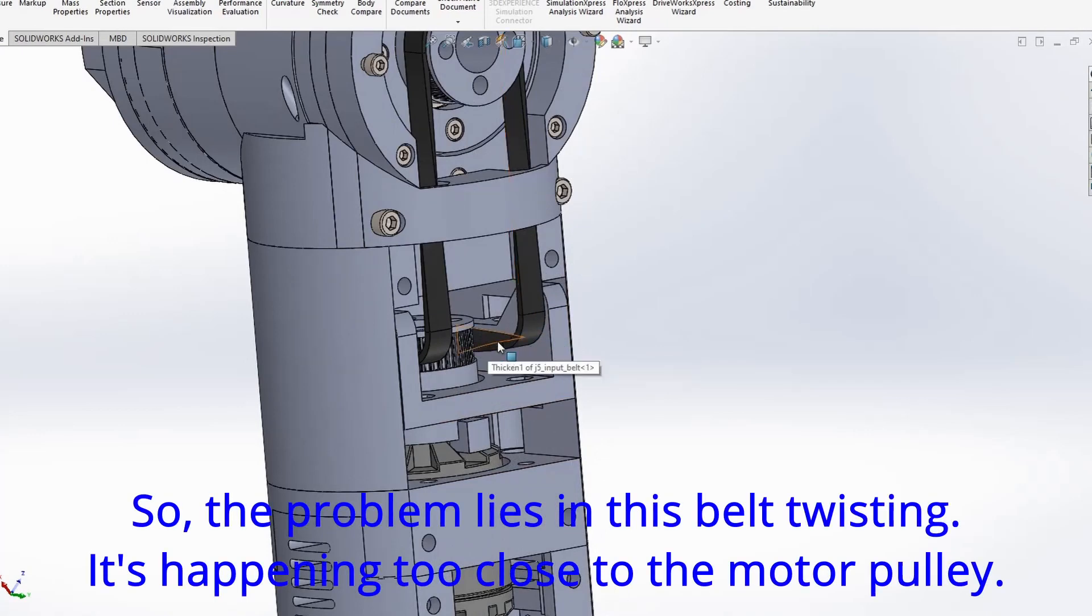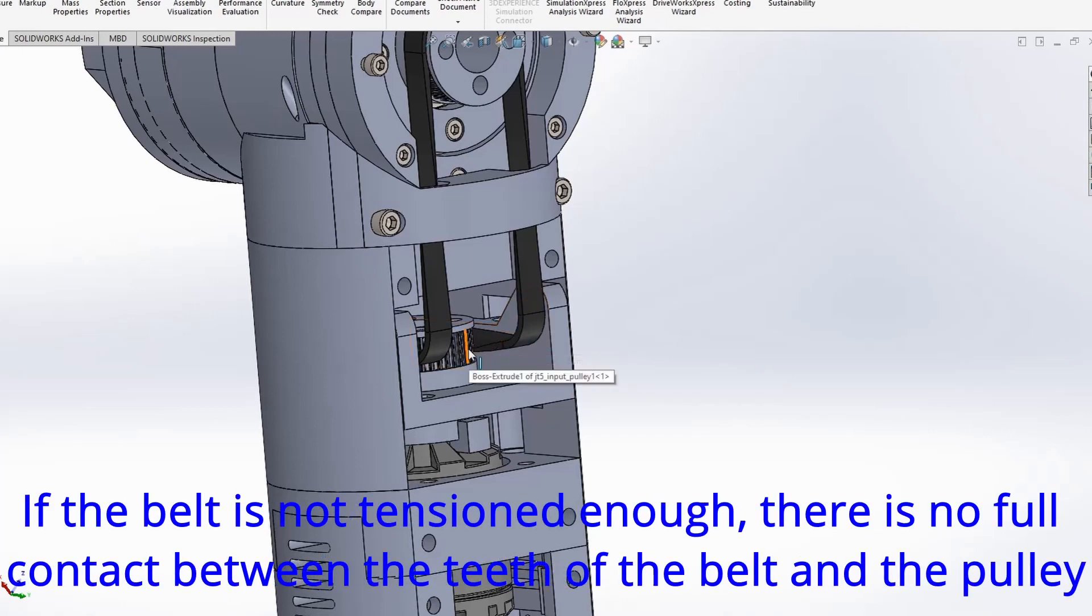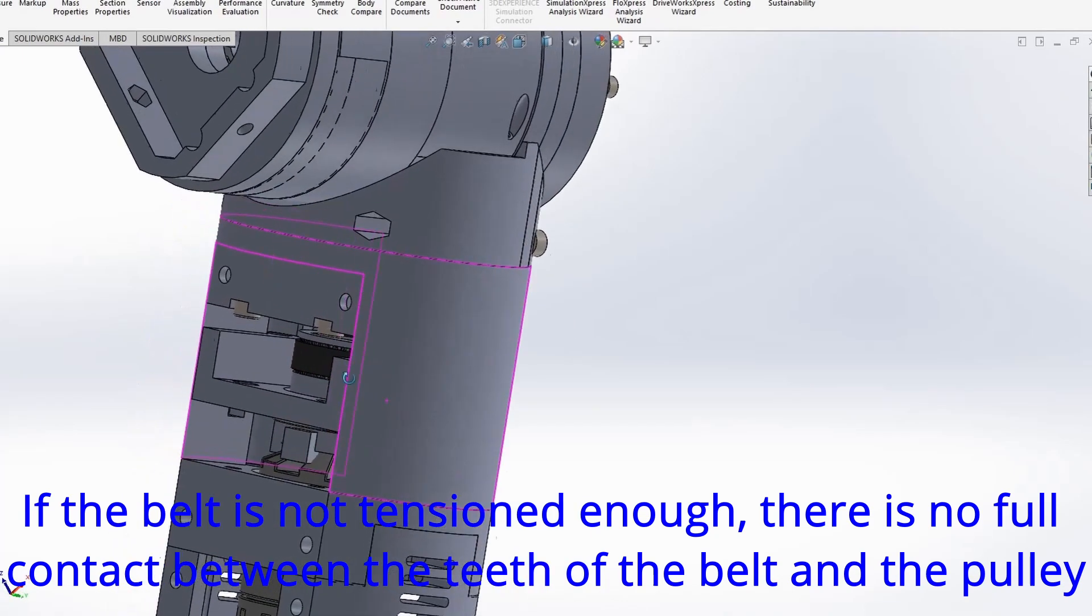So the problem lies in this belt twisting. It's happening too close to the motor pulley. If the belt is not tensioned enough there's no full contact between the teeth of the belt and the pulley.